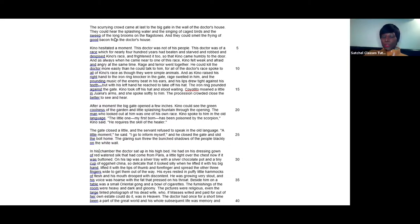For a moment, the big gate opened a few inches. Kino could see the green coolness of the garden and the little splashing fountain through the opening. The man who looked out at him was one of his own race. Kino spoke to him in the old language: "The little one, my firstborn, has been poisoned by a scorpion. He requires the skill of the healer." The gate closed a little, and the servant refused to speak in the old language. "A little moment," he said. "I've got to inform myself." And he closed the gate and slid the bolt home. The glaring sun through the bunched shadows of the people, blackly on the white wall.